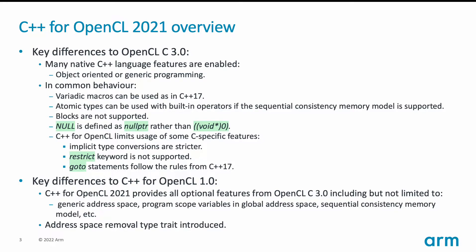The key differences to the predecessor of C++ for OpenCL 2021 are that a number of features are made optional, because in OpenCL 3 these features became optional. Examples of these features are generic address space, program scope variables in global address space, or the sequential consistency memory model. For the full list of features, please refer to the OpenCL C 3 specification.